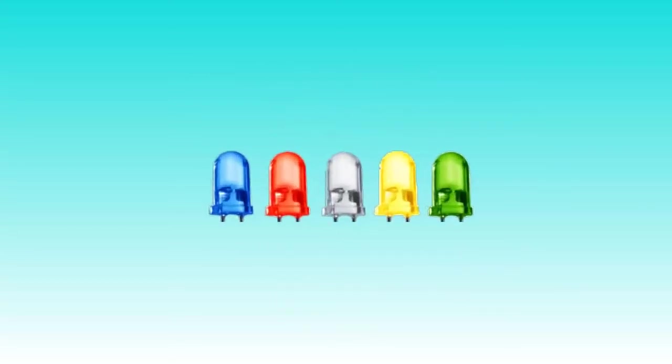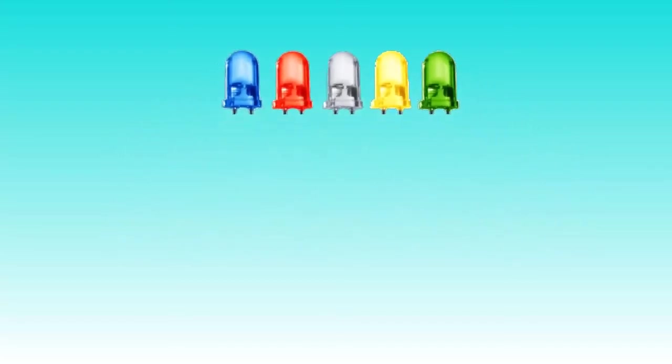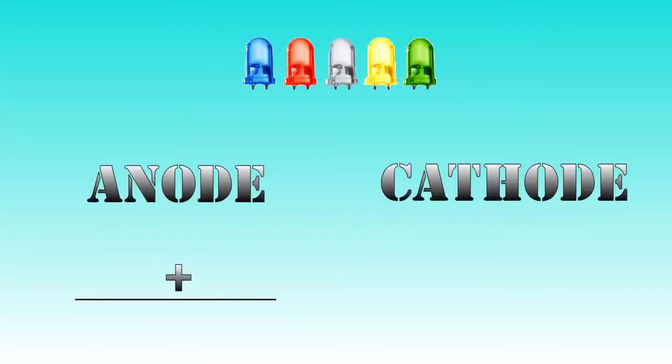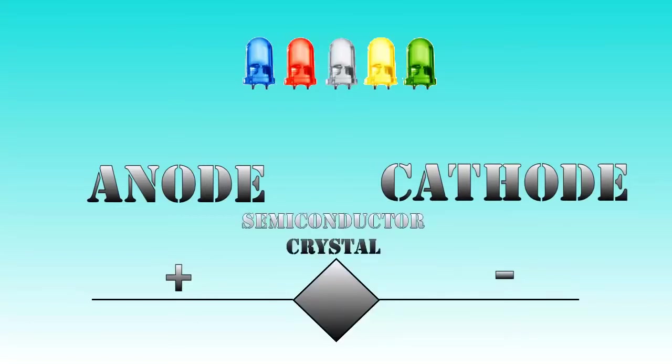An LED consists of three components: an anode, the positive wire, a cathode, the negative wire, and a semiconductor crystal in between them.